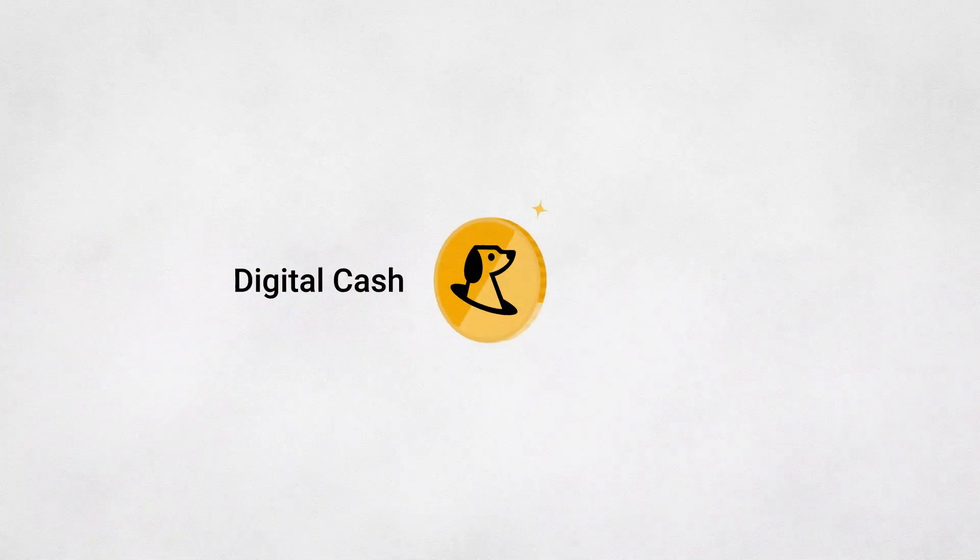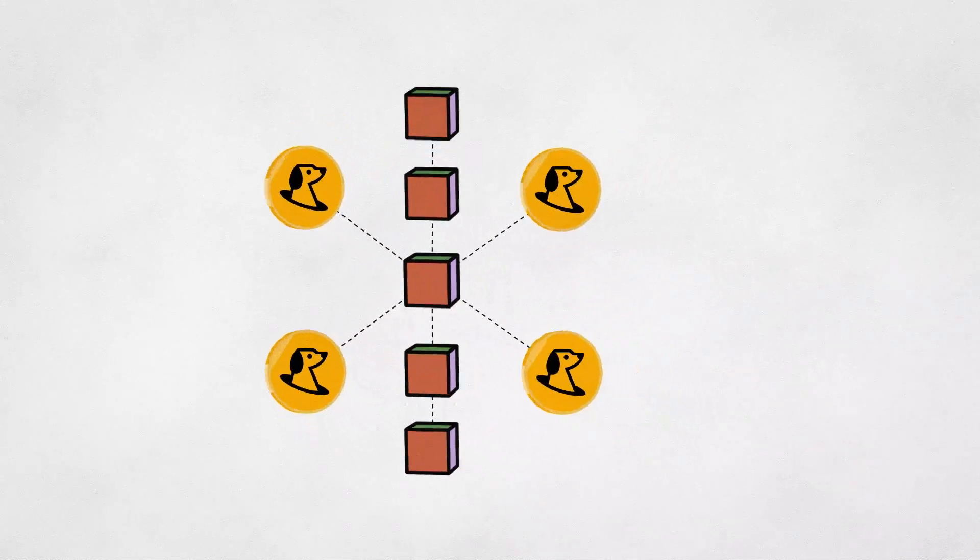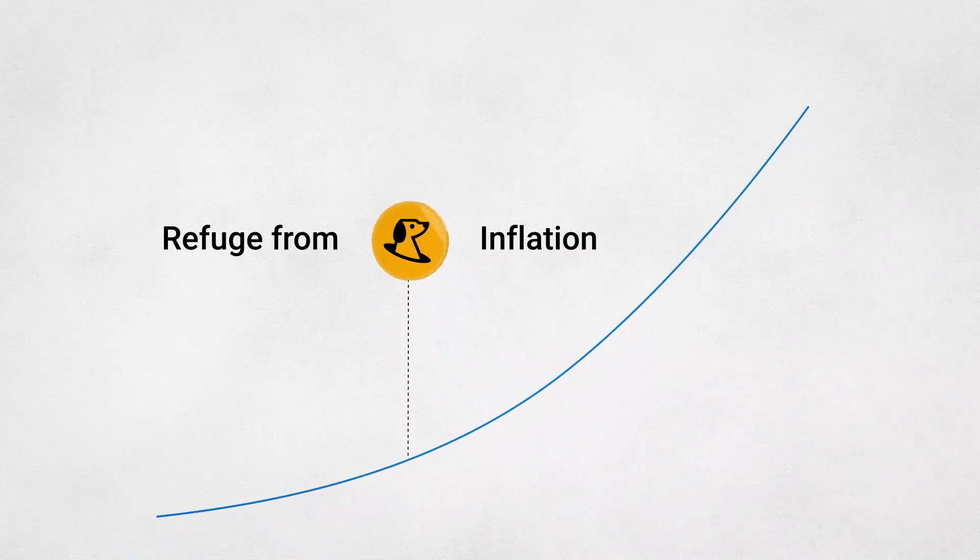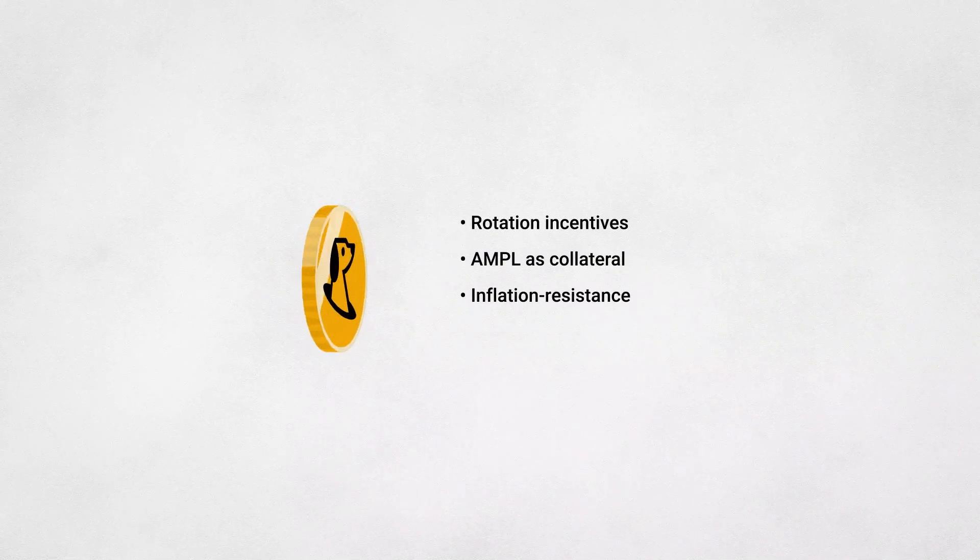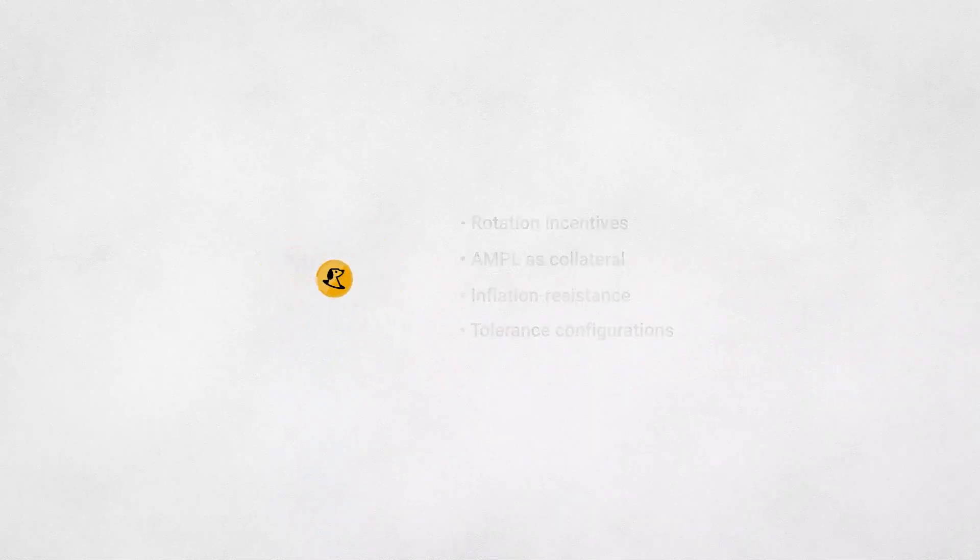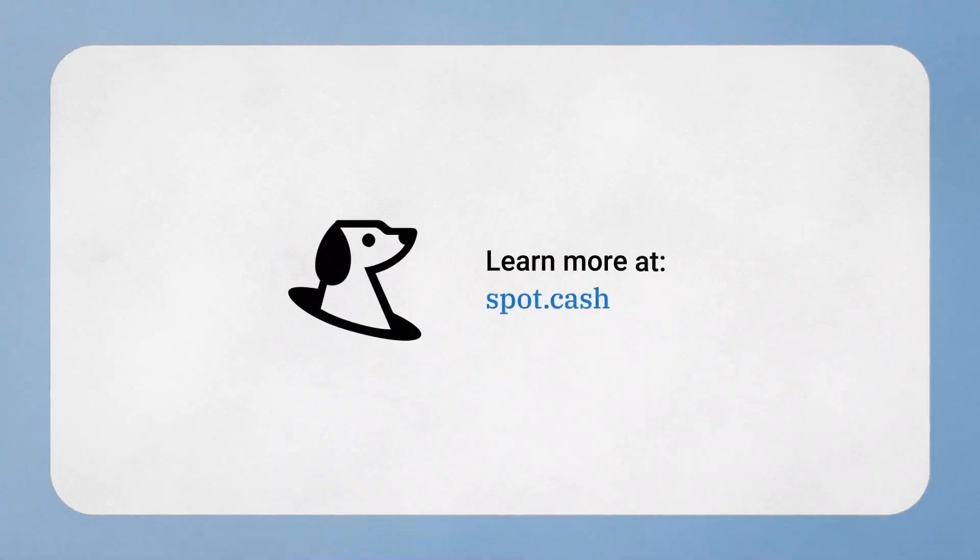In the long run, SPOT can function as peer-to-peer digital cash, as collateral for decentralized finance protocols, and as a refuge from inflation. To learn about SPOT's rotation incentives, its use of ample as collateral, inflation resistance, tolerance configurations, and more, visit spot.cash.